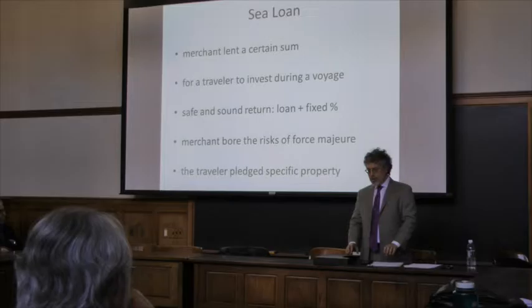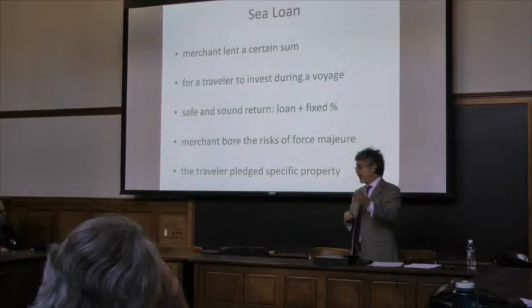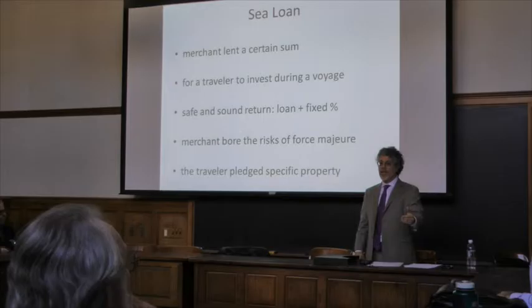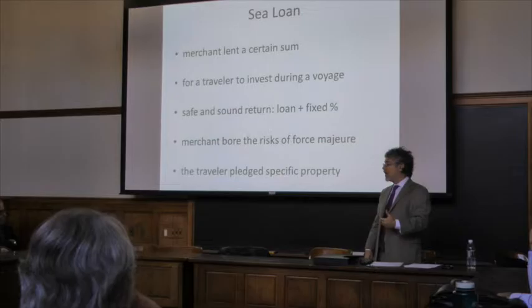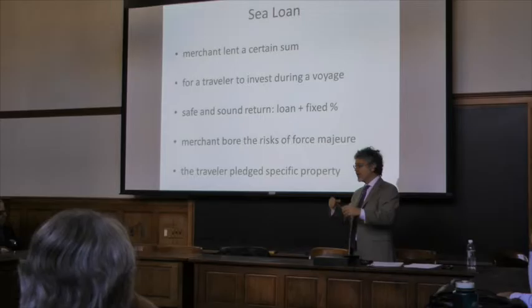In the literature about the sugar trade, this kind of operation is usually associated more with insurance, because for the smaller trader it works as insurance — he doesn't have to worry about the risks beforehand. That's actually how canonists and jurists made it legal: it was not usury, because the lender was shouldering the risk, making it look like insurance. But at the same time, it was also a credit operation and had elements of a commercial agency arrangement.